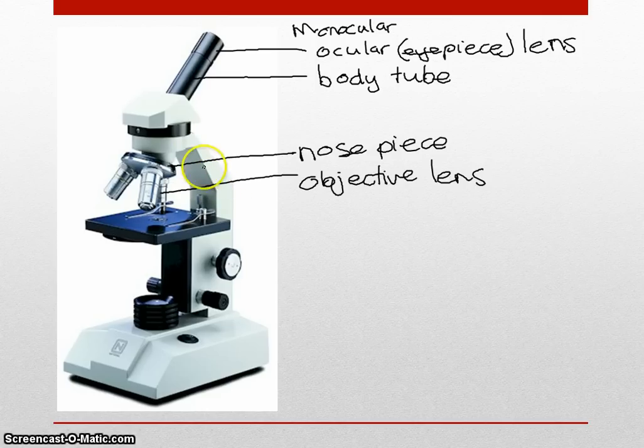This structure is known as the arm and it connects the various parts to the rest of the microscope. This is known as the stage, where you place the slide or the thing you're looking at.